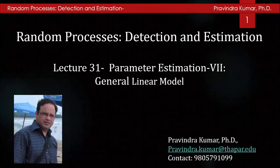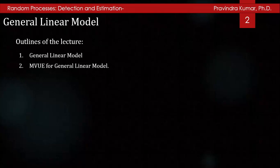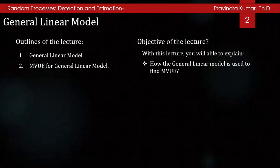Welcome to the lecture series of Random Processes, Detection and Estimation. This is the 31st lecture of the series. In the previous lecture we discussed the linear model useful to find MVUE. In this lecture we will discuss the extension of the linear model that allows for noise that is not white. The outline covers the general linear model and MVUE for the general linear model, with the objective of explaining how the general linear model is used to find MVUE when the noise is not white.